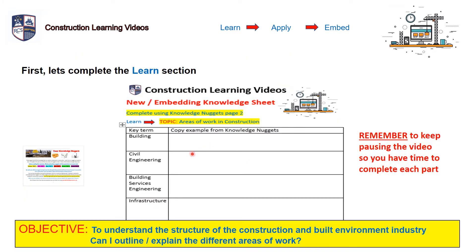Your first job: using your Knowledge Nuggets, you need to copy the terms for Building, Civil Engineering, Building Services Engineering, and Infrastructure. In your Knowledge Nuggets, find page 2 and copy across those terms. As you do that, I'll be giving you some additional information, we'll be looking at some images, and at the end we'll be moving on to the Apply section. Keep pausing this video as we go so that you're comfortable.